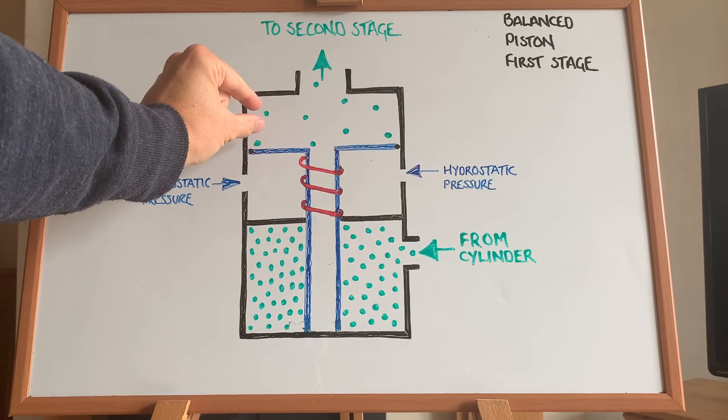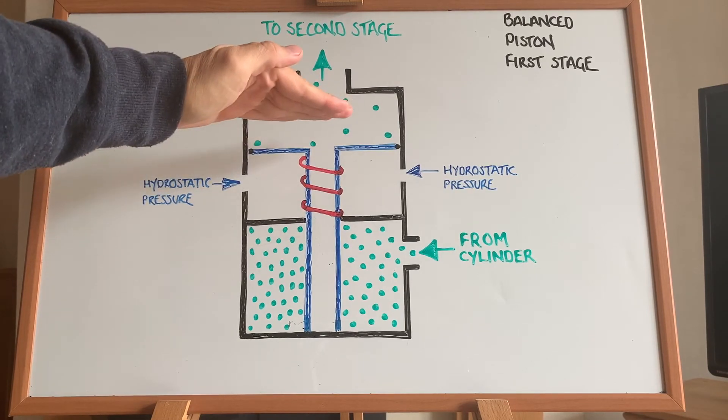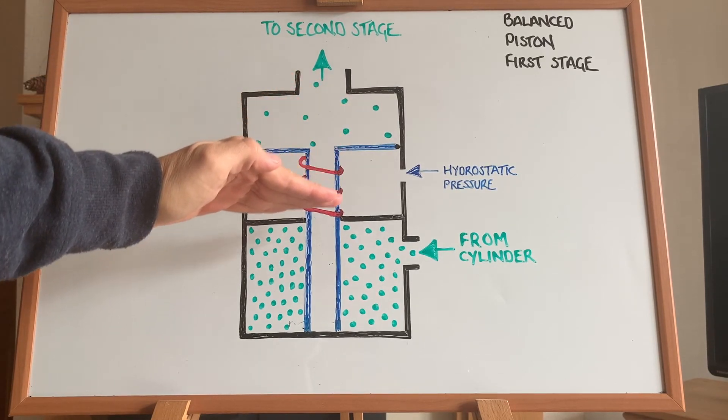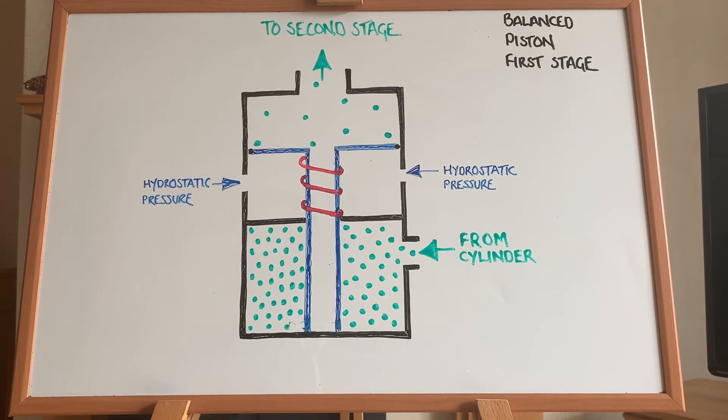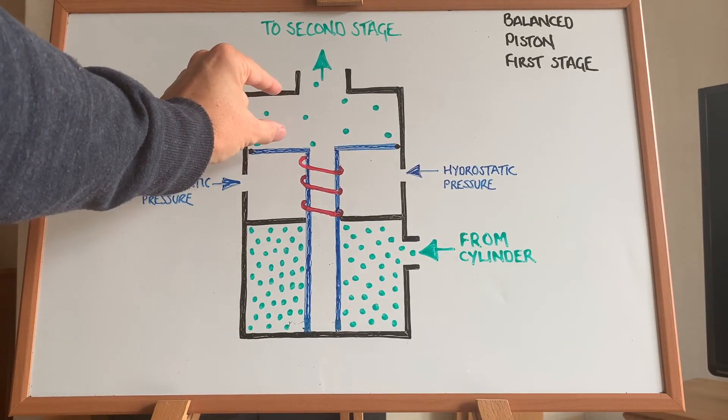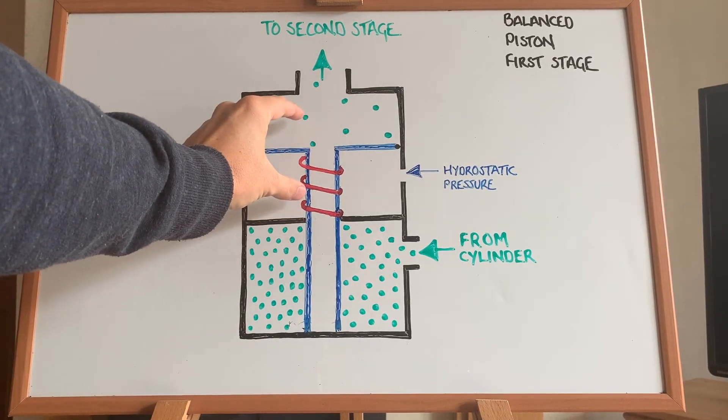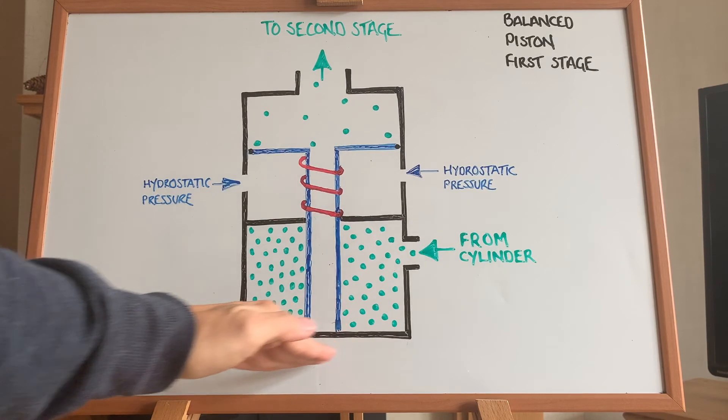Now, as the pressure builds inside this chamber, what it does is it starts to actually push the piston back down and reseal it across the bottom, preventing more high pressure gas from entering. This will keep building until the pressures are equal, and then that's when it is sealed.